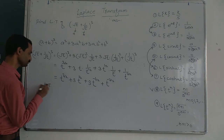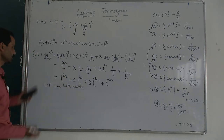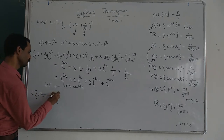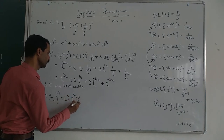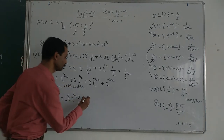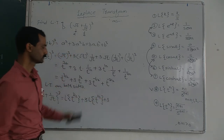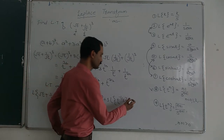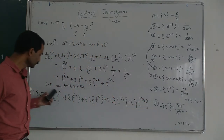Now we take the Laplace transform of both sides. Laplace of (root t + 1 upon root t) whole cube equals Laplace of t^(3/2), plus 3 times Laplace of t^(1/2), plus 3 times Laplace of t^(-1/2), plus Laplace of t^(-3/2). The constants 3 are taken outside.